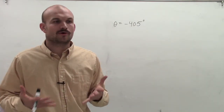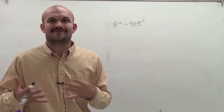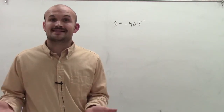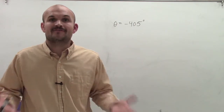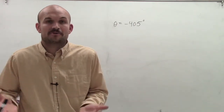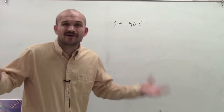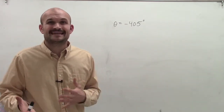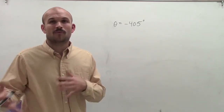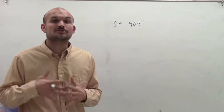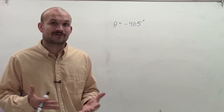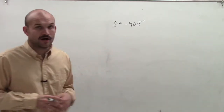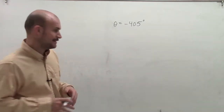Usually what we could do is just graph negative 405 degrees and kind of see where it lies on the unit circle and then evaluate for it. However, if you don't have the unit circle with you, or if you forget where all the points are on the unit circle, what we can do is use reference angles to help us determine our point on the unit circle.